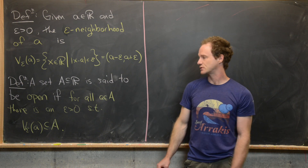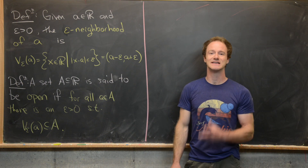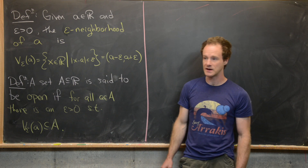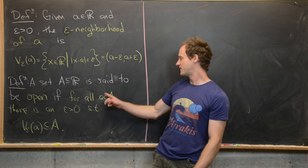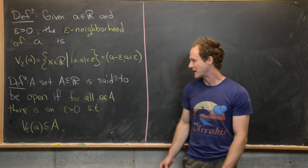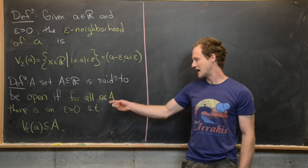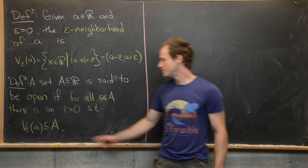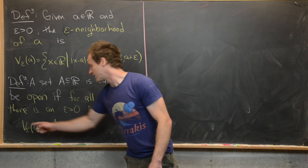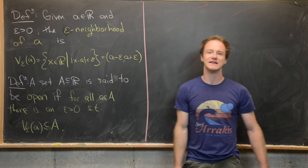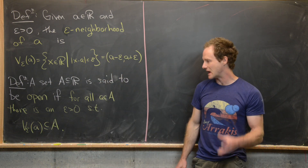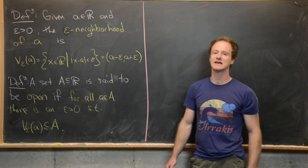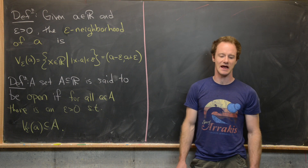Next, we say that a subset A of the real numbers is open if for every a in A, there is an epsilon where we can find one of these epsilon neighborhoods that is completely contained in A.